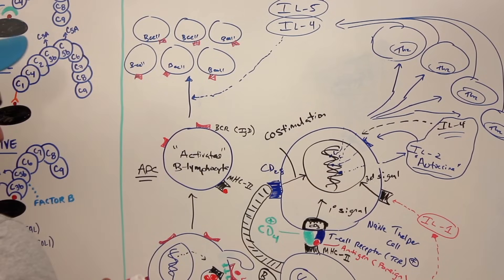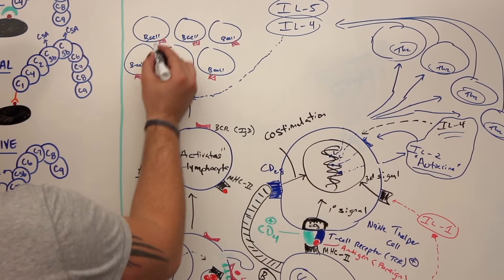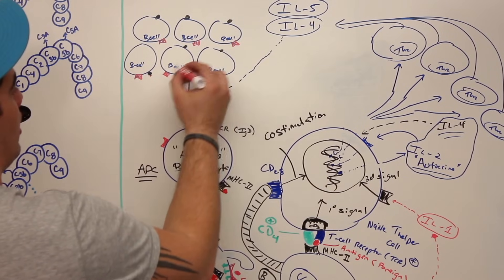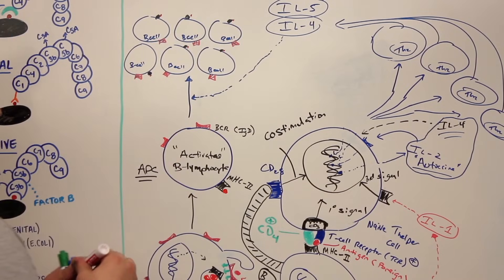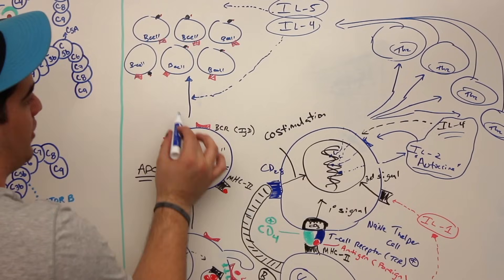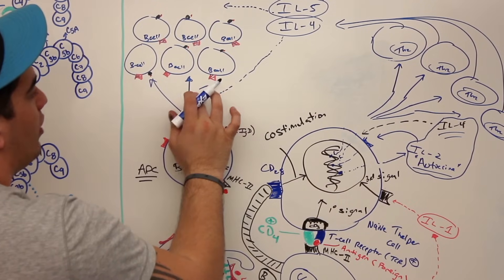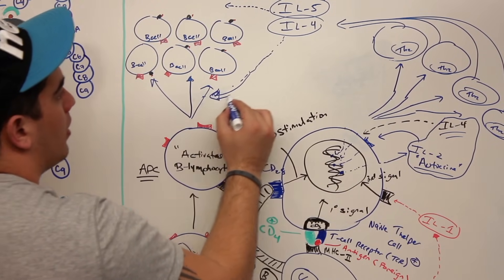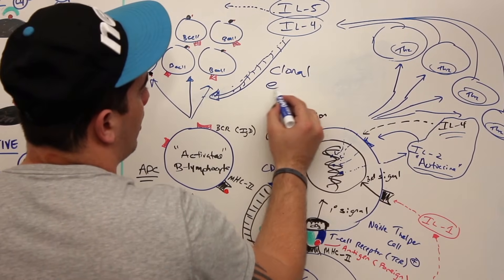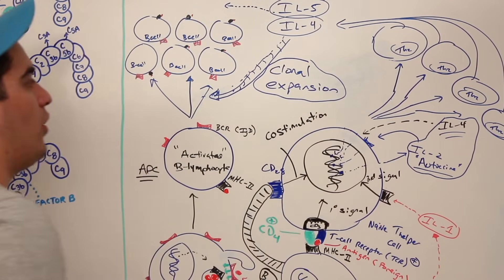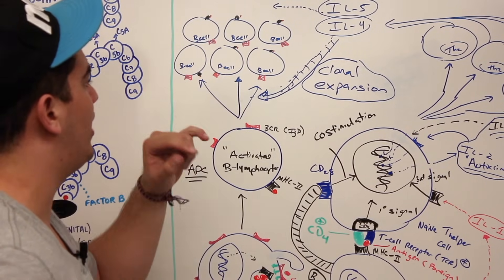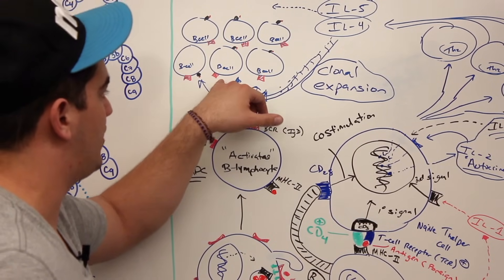The B cells have B cell receptors specific to that antigen and MHC2 molecules with the foreign antigen. Then interleukin-5 stimulates all of these. When interleukin-4 stimulates the B cells to start dividing, this is called clonal expansion. These guys expand and undergo excessive proliferation, making tons of activated B cells that are immunocompetent and specifically able to recognize that foreign antigen.